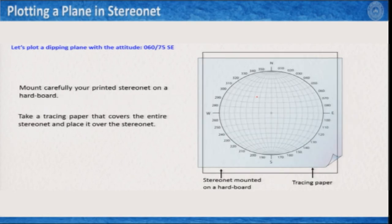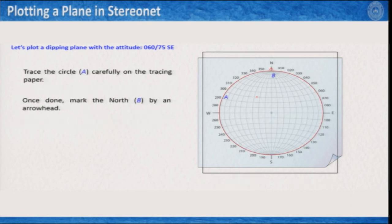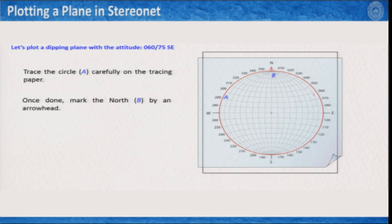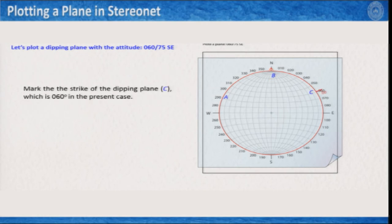Now let us see how to plot a plane on the stereonet. We have the example of a dipping plane with data 060/75SE — meaning its strike is 60 degrees and it dips 75 degrees towards the southeast. The initial steps are similar: mount your stereonet on a hard board, place tracing paper over it, trace the primitive circle, and mark the north at point B. As the strike is 60 degrees, mark the strike 60 degrees on the tracing paper, but this time align this 60-degree mark to the north of the stereonet rather than east or west.